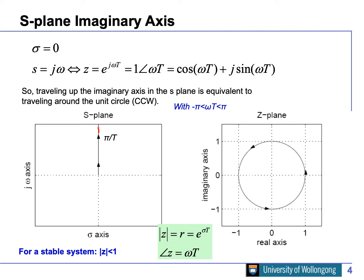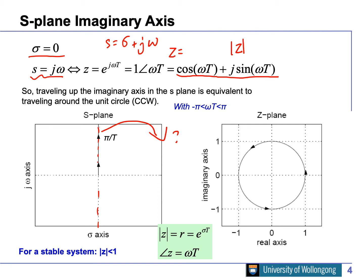Now let's look at the mapping of the imaginary axis from S-domain to Z-domain. On the imaginary axis, sigma equals zero, so s = j*omega. Then z = cosine(omega*T) + j*sine(omega*T). The absolute value of z is always one, because cosine squared plus sine squared equals one. So the entire imaginary axis maps onto the unit circle in the Z-domain.